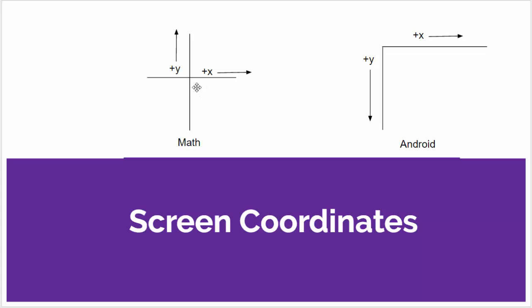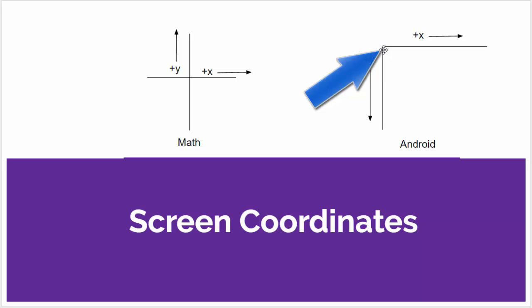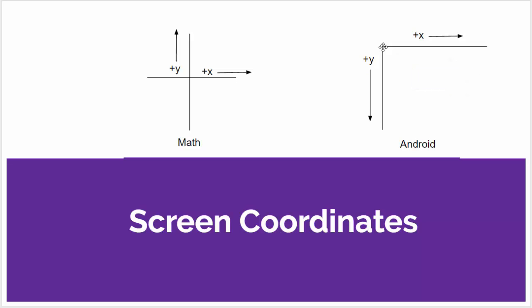In math class, you learn that when you have a coordinate system, 0,0 is typically shown in the center and the positive x direction is to the right while the negative x direction is to the left. Going up along the y-axis yields larger and larger y values, and going below the origin yields negative y values. But in an Android system, as is the case with most gaming systems, the top left corner of the screen is typically known as the origin or 0,0. Movements to the right yield larger x values. However, as we get larger in the y coordinate, we go further down on the Android screen. Anywhere on the screen, the x and y coordinates are always positive.